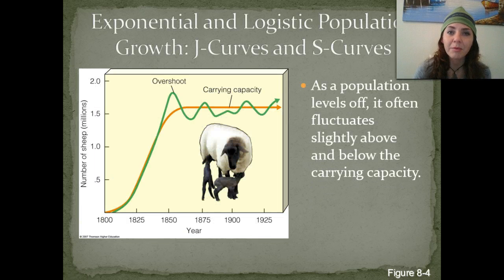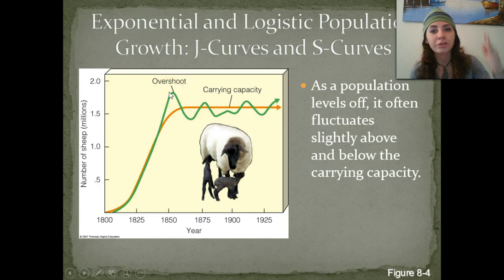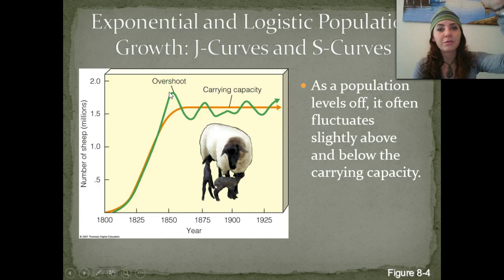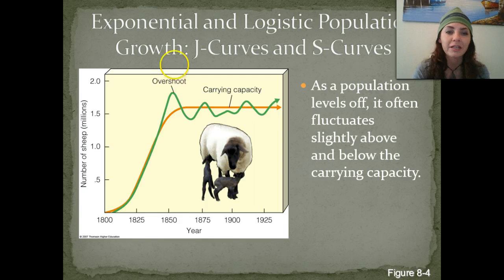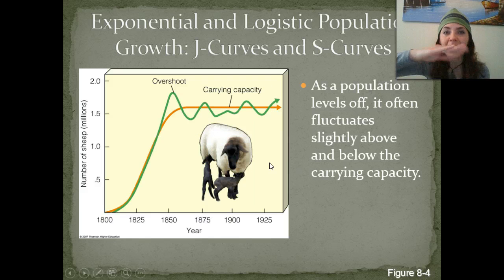As a population levels off, it often fluctuates slightly above and below the carrying capacity. You can see here we have an overshoot, and eventually that overshoot decreases a little bit and goes back to the carrying capacity. Sometimes we have an undershoot, sometimes an overshoot, but it'll hover at that carrying capacity line.